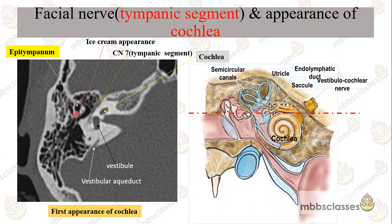When you get this type of ice cream cone appearance, the ossicles can be assessed from the epitympanum to the mesotympanum. In all axial sections, to assess the ossicular status, look at their appearance. In the epitympanum they appear like an ice cream cone — the anterior part is formed by the head of the malleus, and the posterior cone is formed by the body of the incus. The passage connecting the epitympanum to the mastoid is the aditus ad antrum; when you get the ice cream cone appearance, you will also be able to see the cochlea.